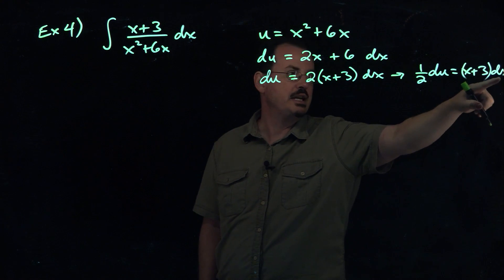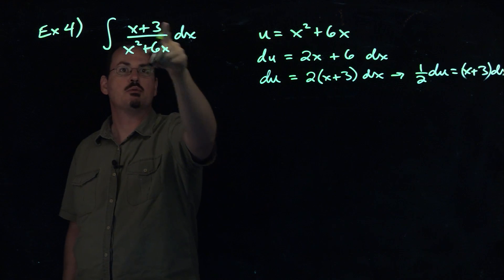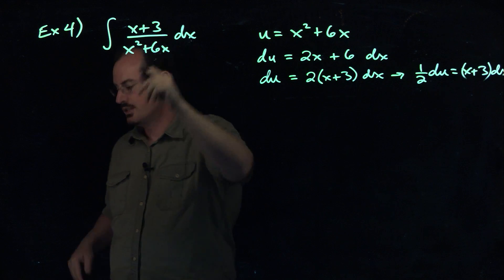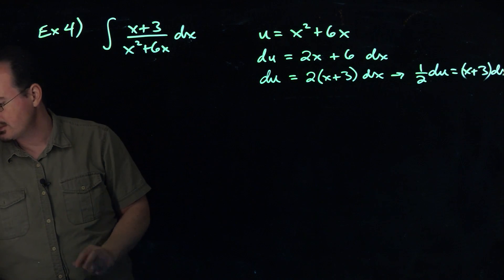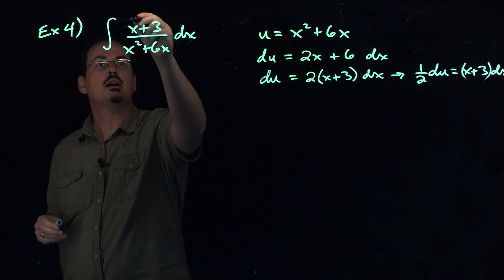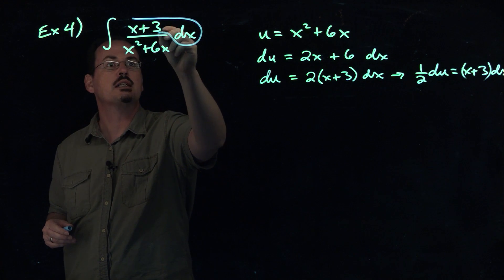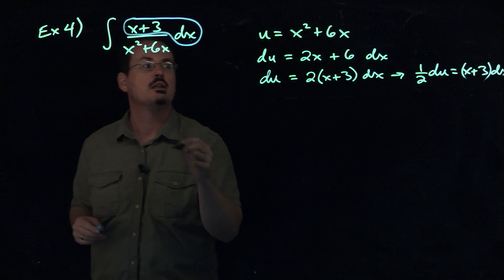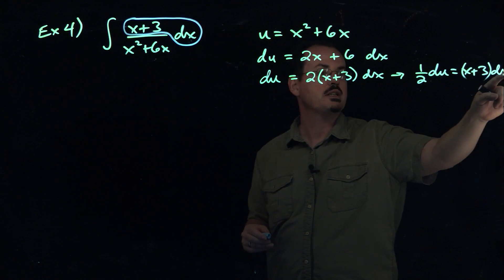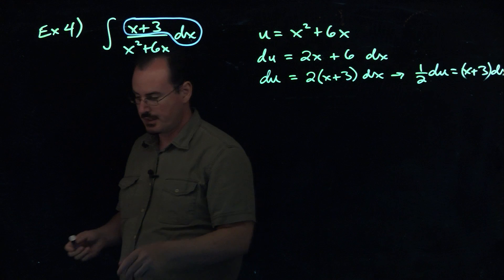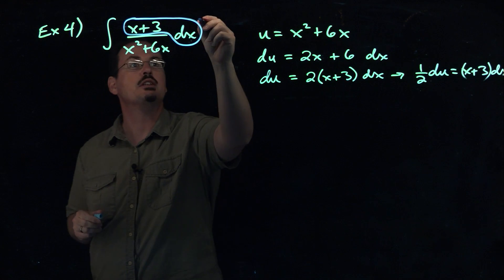So now that x plus 3 dx, that is exactly the same as what we see in the numerator here. Maybe use a different color here to see what's going on. This numerator part here, the dx and the x plus 3, that's what we see here, x plus 3 and the dx. That is going to turn into 1/2 du. So this is 1/2 du.